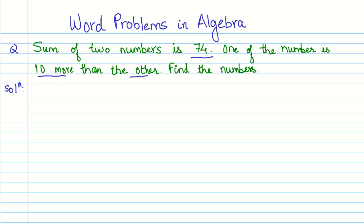Now the key idea in solving word problems involving algebra, the first step is to form an algebraic equation. To form an algebraic equation we need a variable, an unknown. So what is unknown here? Sum of two numbers is 74. One of the number is 10 more than the other. Both numbers are unknown, but we have a relationship between the two numbers in this statement. One of the number is 10 more than the other.